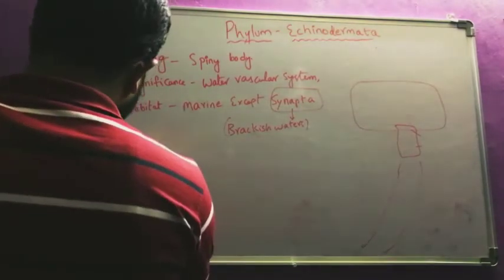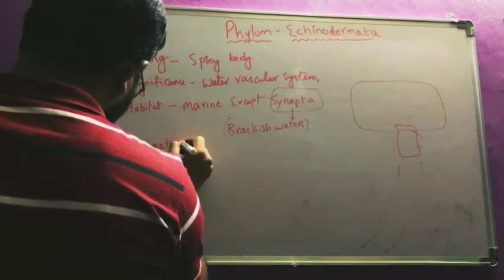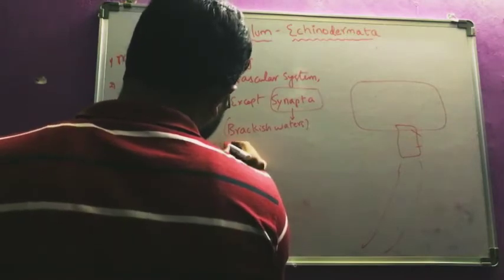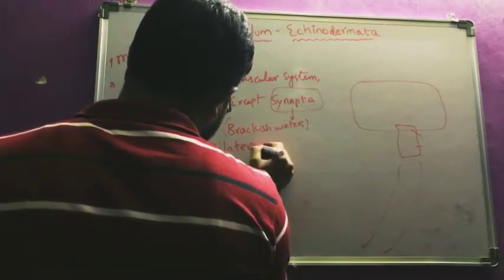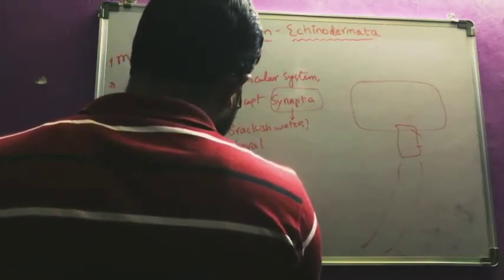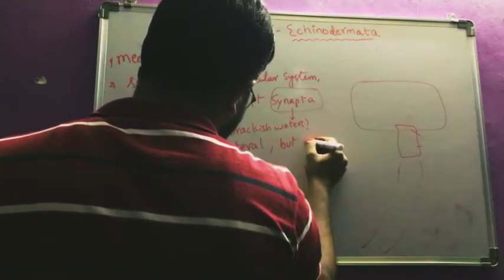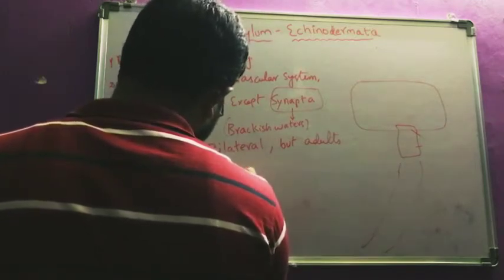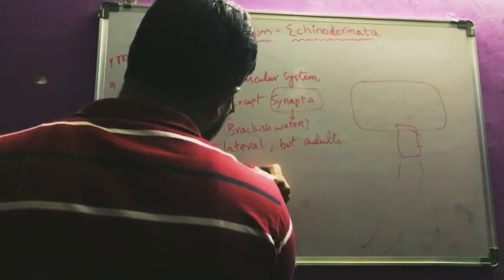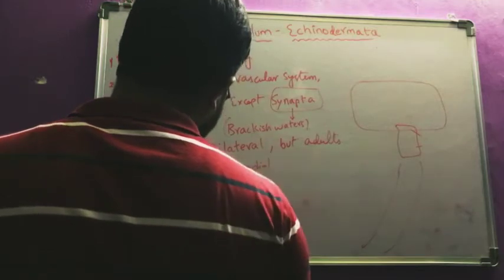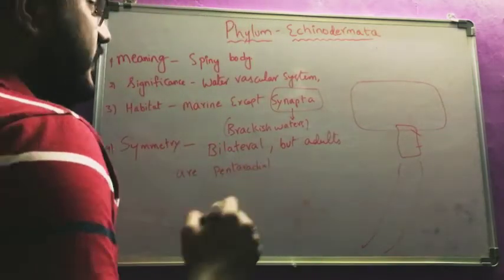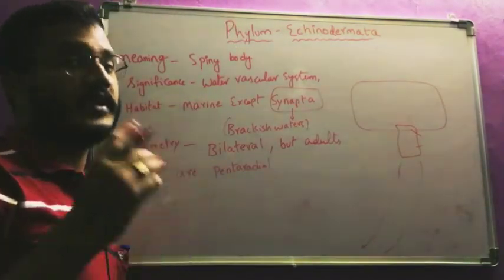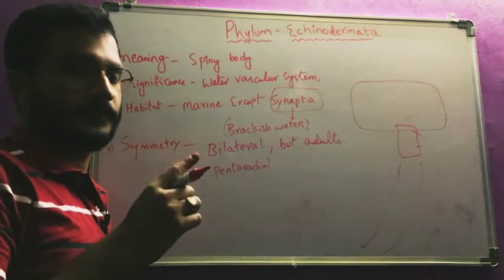Regarding symmetry, the larvae are bilaterally symmetrical, but the adults are exhibiting pentaradial symmetry. Pentaradial means the body can be cut into equal halves by using five different planes, but the axis is one.